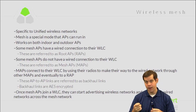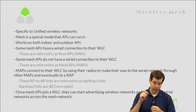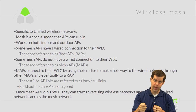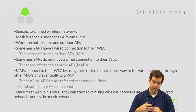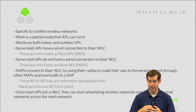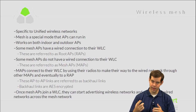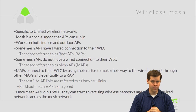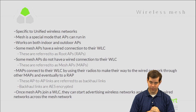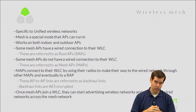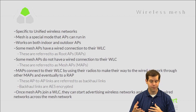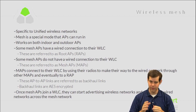When MAPs connect wirelessly — either map to map or map to RAP — they're using their wireless interfaces to do this. These wireless AP-to-AP links are referred to as backhaul links. Those links are AES encrypted, so you don't have to worry about configuring any special encryption. It is automatically encrypted as data travels AP to AP. Regardless of what the WLANs are configured for, the AP-to-AP backhaul connections are always AES encrypted.